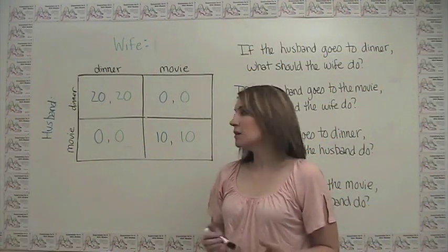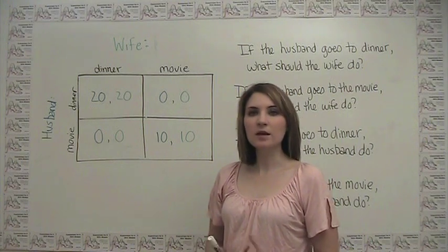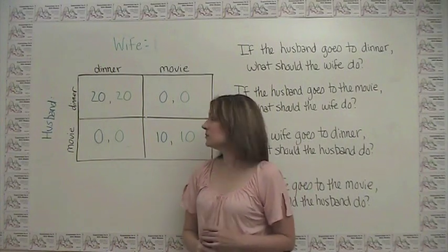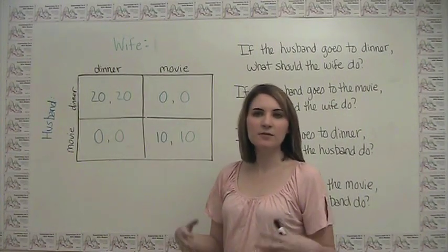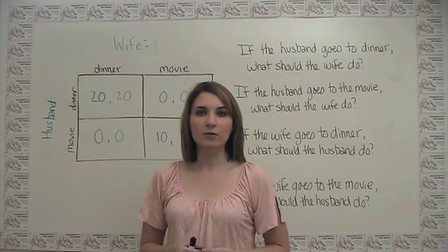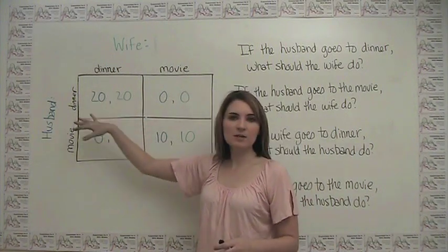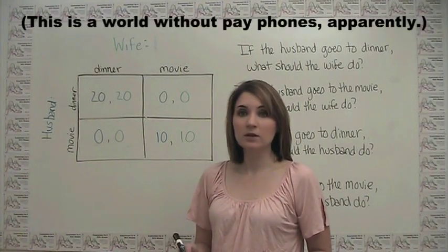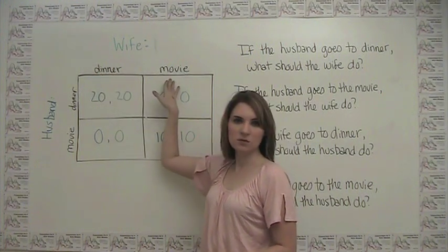Let's consider another game. Rather than talking about prisoners or competitors, let's take an example of a husband and wife. They left their cell phones at home and have to figure out what to do in terms of meeting up for an evening activity. They have to make the decision simultaneously and can't communicate to figure out where they should go. Each of them has a choice of whether to go to dinner or to a movie.